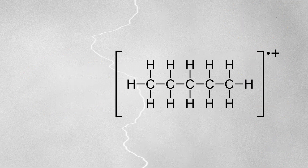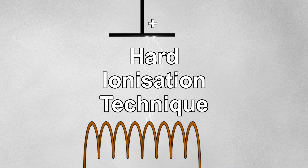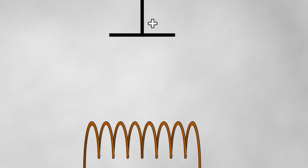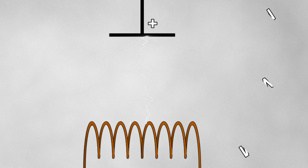We denote the molecular ion M+. Electron impact is considered a hard ionization technique because it uses high energies which leads to extensive fragmentation. In fact, with some molecules the sample will fragment so much that the molecule itself is not detected, since every trace of the molecule fragments before it has a chance to reach the detector. With softer ionization, a molecular ion is formed at lower energies so that the molecule rarely fragments.